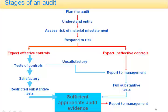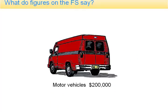Let's concentrate on collecting evidence relating to non-current assets in a company. In particular, we'll look at collecting evidence to deal with the motor vehicles as stated in the balance sheet or statement of financial position. Let's say that the financial statements have motor vehicles there at $200,000. But what exactly does it mean when that $200,000 appears in the financial statements?